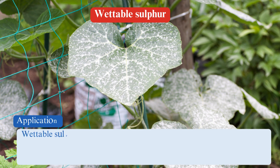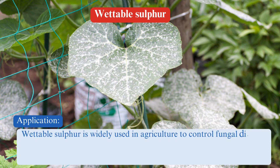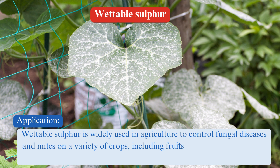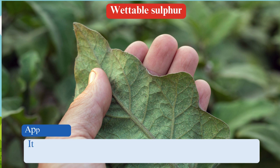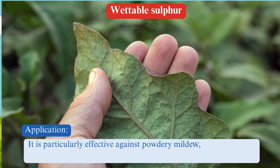Uses. Wettable sulfur is widely used in agriculture to control fungal diseases and mites on a variety of crops, including fruits such as grapes, apples, and berries, vegetables such as tomatoes and beans, and ornamentals. It is particularly effective against powdery mildew, rusts, and scab.